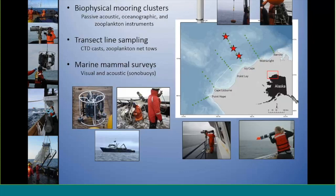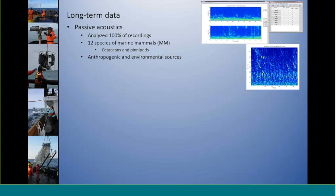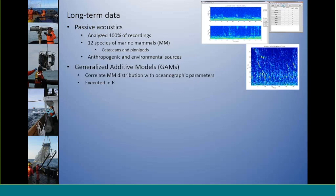Briefly, some methods. We deployed clusters of biophysical moorings at 40, 70, and 110 miles off Icy Cape. During the field season, we did transect line sampling at all of the green dots there. We would deploy CTD casts and do zooplankton nets. We also did marine mammal surveys using both visual and passive acoustic methods. For our analyses of the long-term data set, for passive acoustics, we analyzed 100% of the recordings manually for 12 species of marine mammals, both cetaceans and pinnipeds, as well as for anthropogenic and environmental sources.